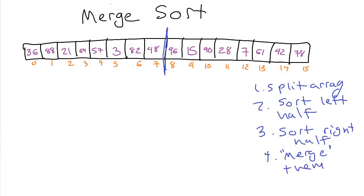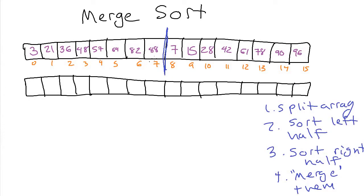Let's short-circuit the recursion now and just imagine that the left half and the right half were themselves already sorted. So now the left half is sorted and the right half is sorted, and what we have to do is merge them back together. To do that, we'll make a new copy of the array of the same size, and merge the two halves into it. We'll place indices at the beginning of the left half and the beginning of the right half, and keep looping until one of them runs out. Each time through the loop, we compare the two values and see which one is smaller.